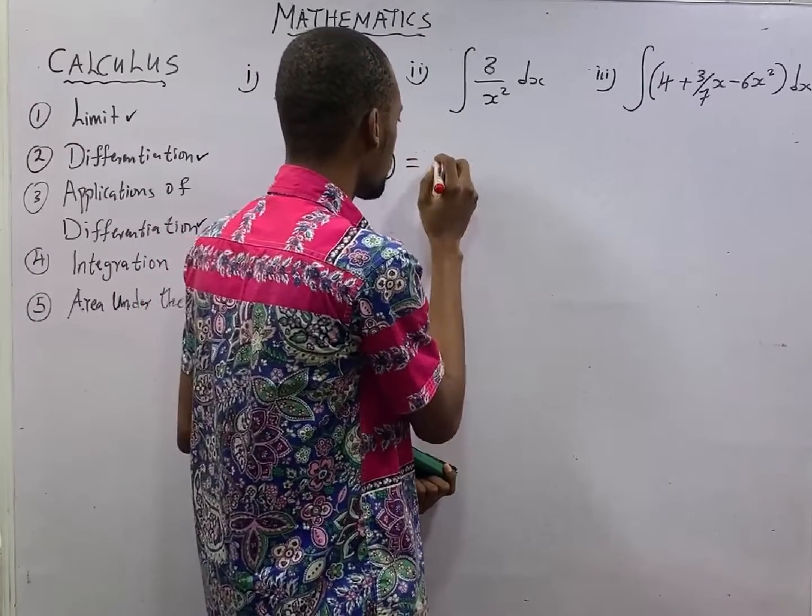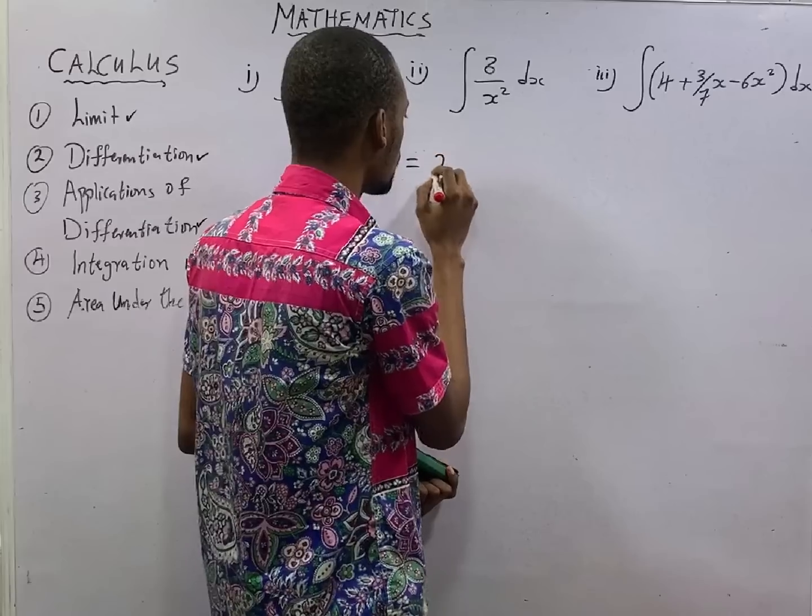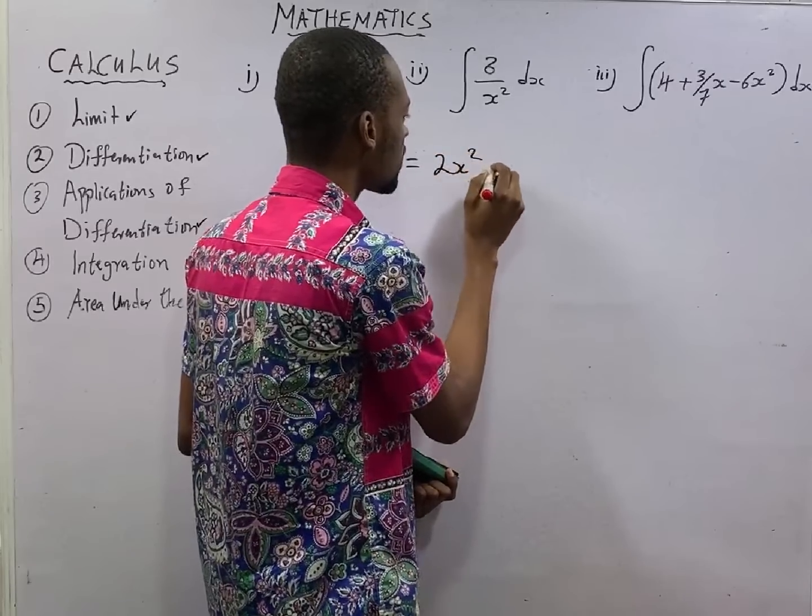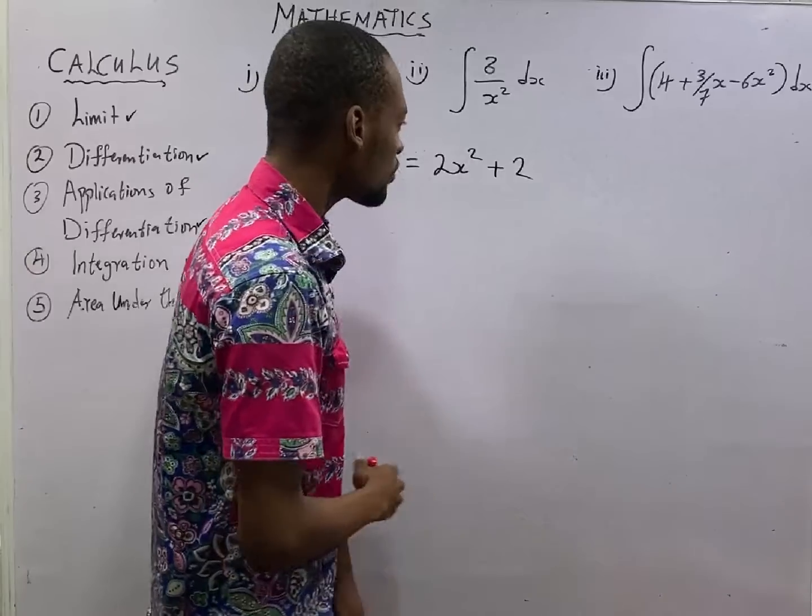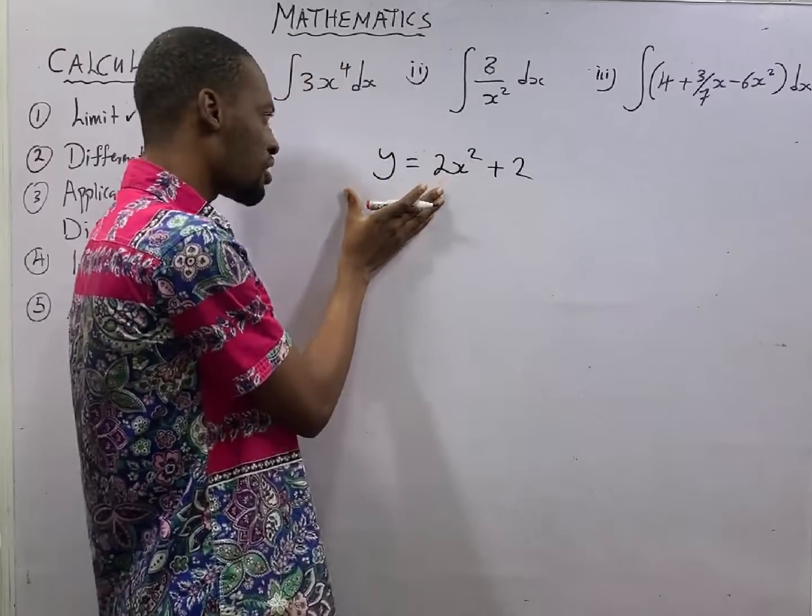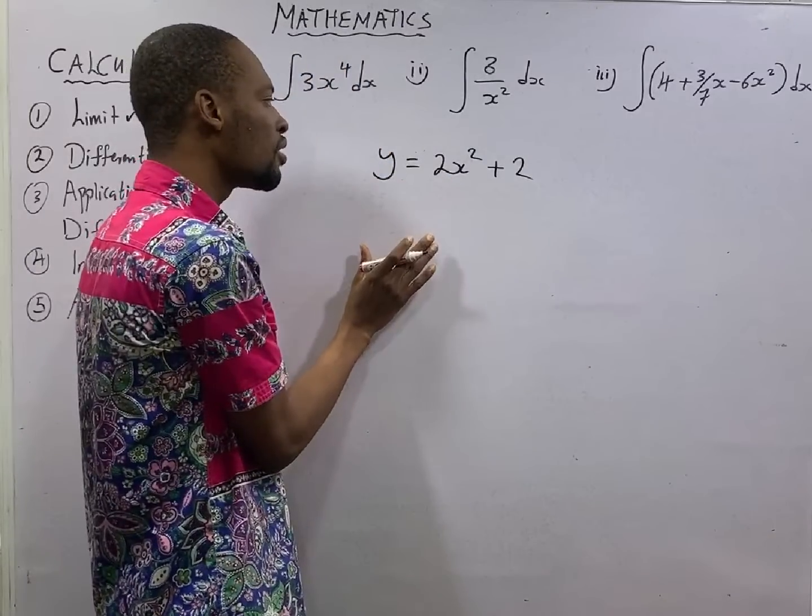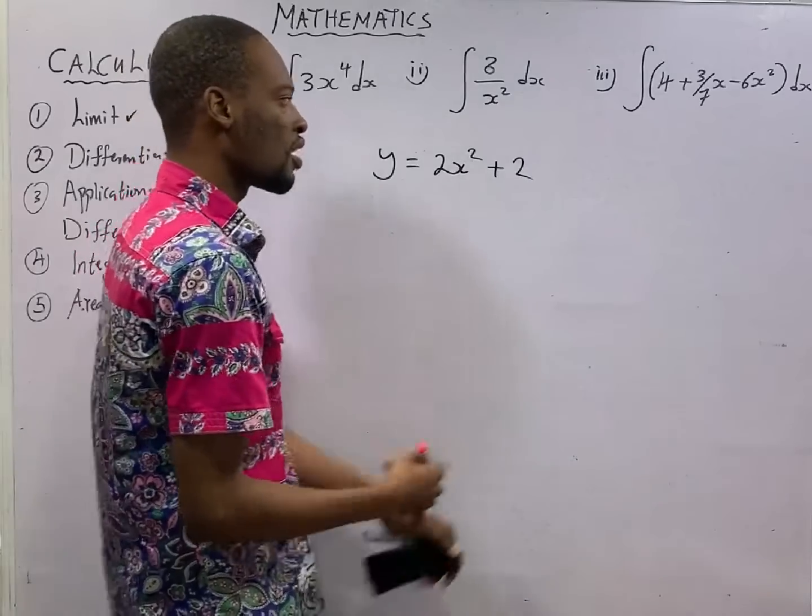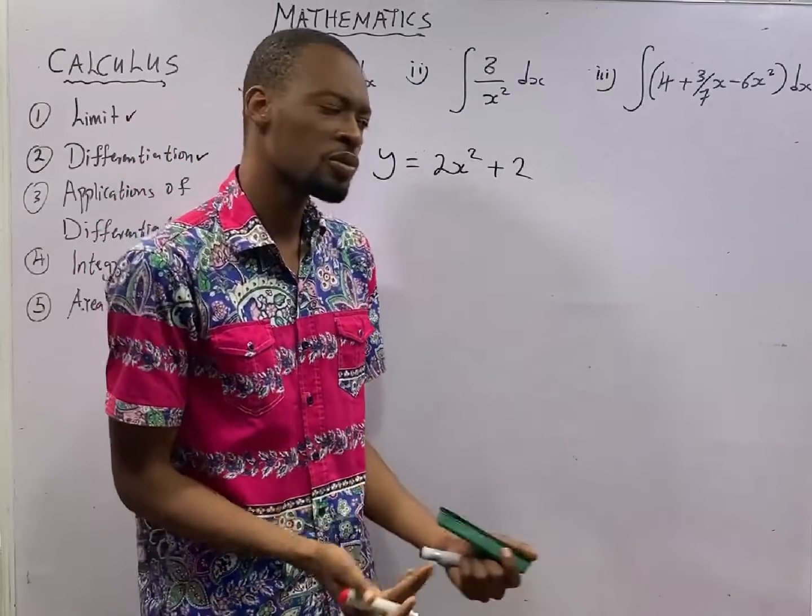y is equal to 2x squared plus 2. This is a function. After differentiating the room, after differentiating the room, you scatter the room.